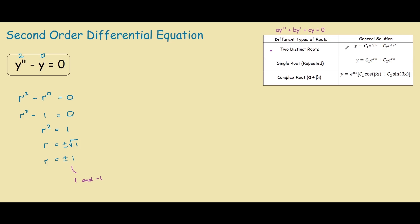Therefore, the general solution is y equals c1 e to the power of our first root, so 1x, plus c2 e to the second root, so negative 1x.